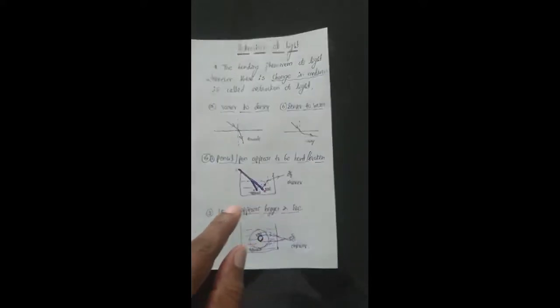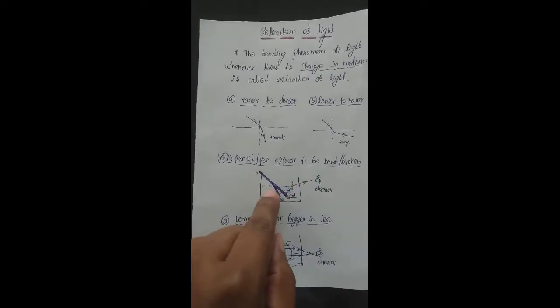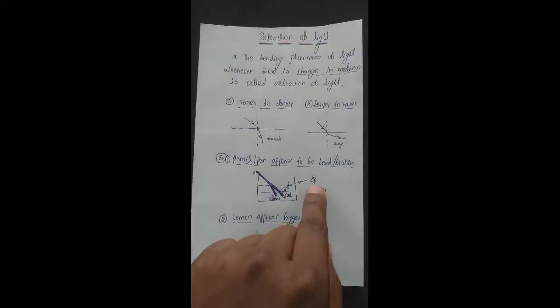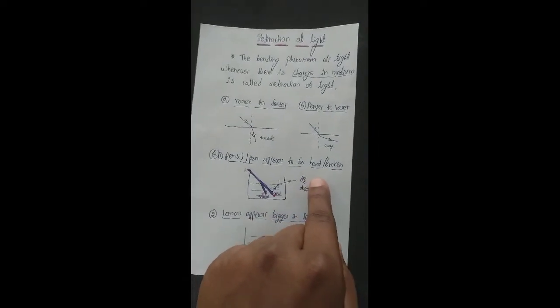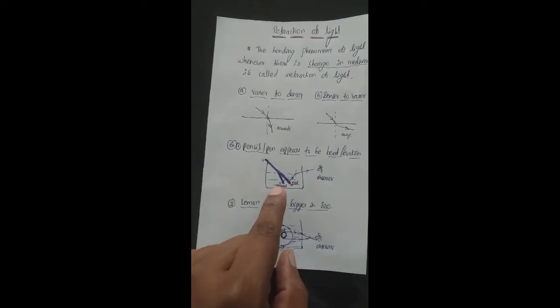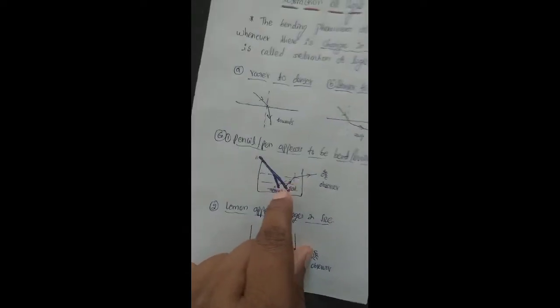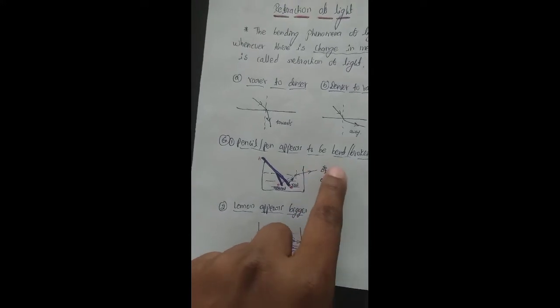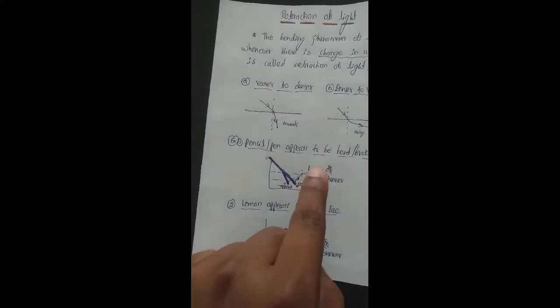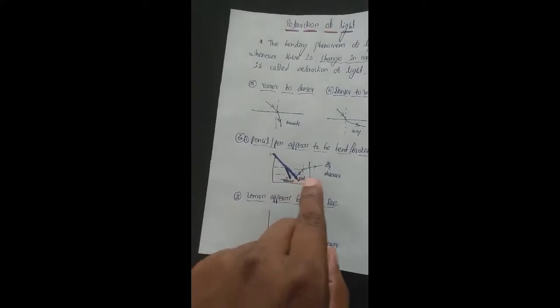In the pen and pencil example, the pen appears bent or broken when immersed in water because the light ray is moving from denser to rarer medium — water is denser and air is rarer. The observer is in the air, so it is the second case: denser to rarer. The ray bends away from the normal, shown by the dotted line, and for the observer the ray appears at point C, so point B appears at C — making the pencil appear bent or broken.